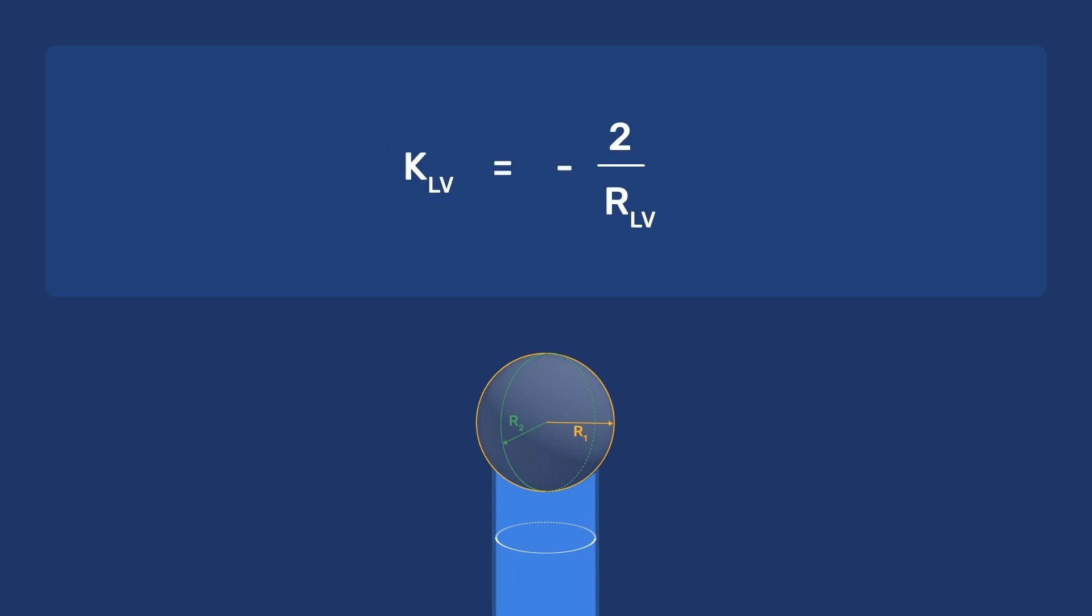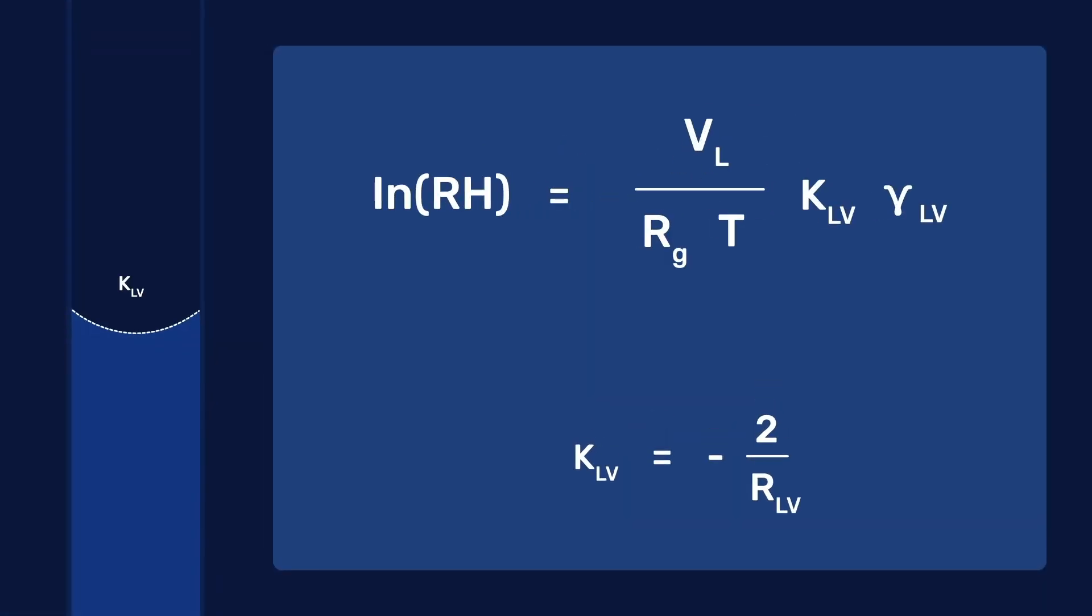the curvature is kappa LV equals minus two over RLV. Considering such a spherical curvature, for Kelvin's equation, LnRH equals VL over RT times kappa LV gamma LV. Thereby, we find that, for a spherical interface of radius RLV, LnRH becomes minus two VL gamma LV over RT times one over RLV.